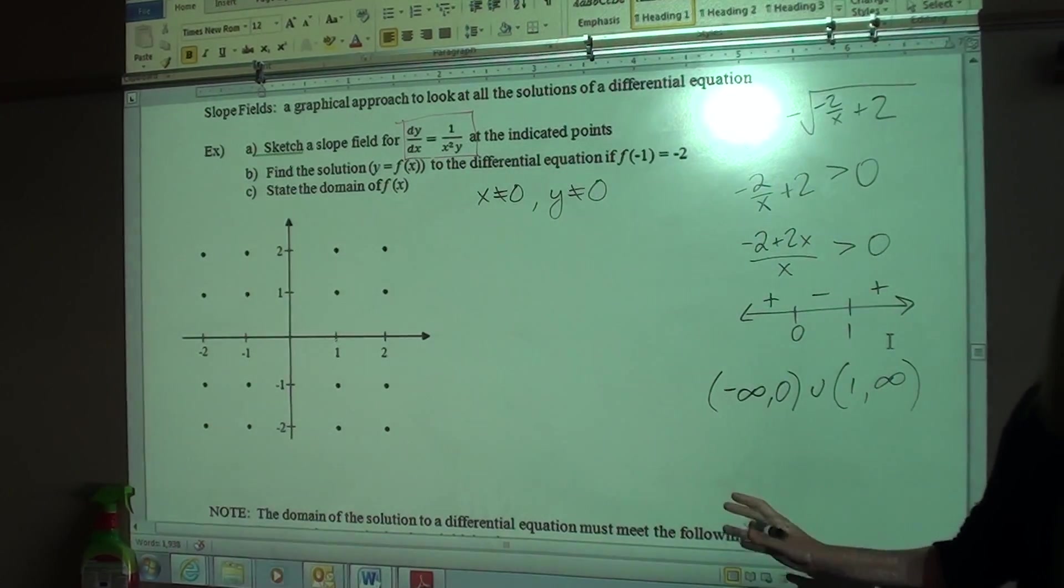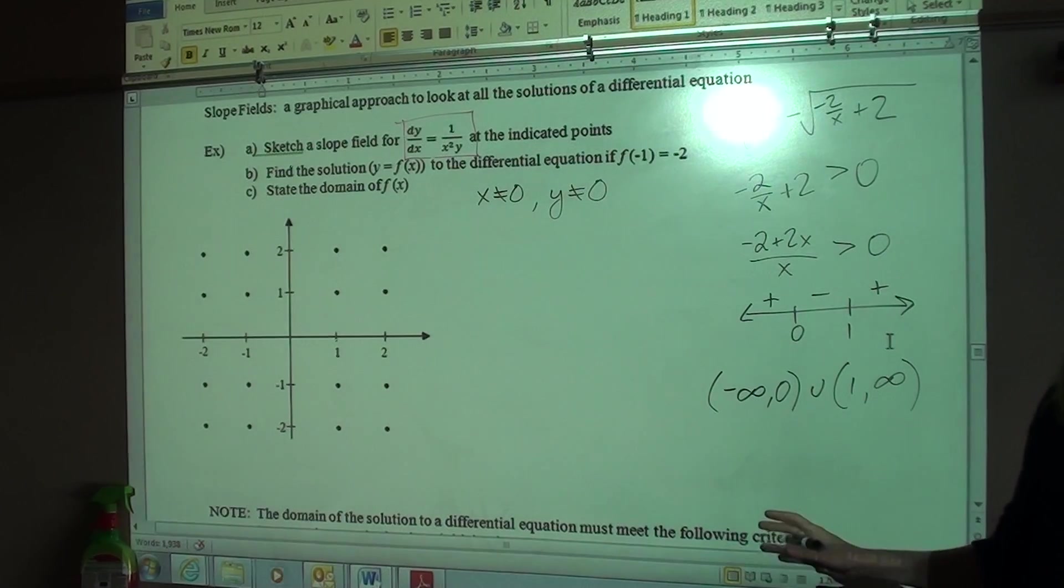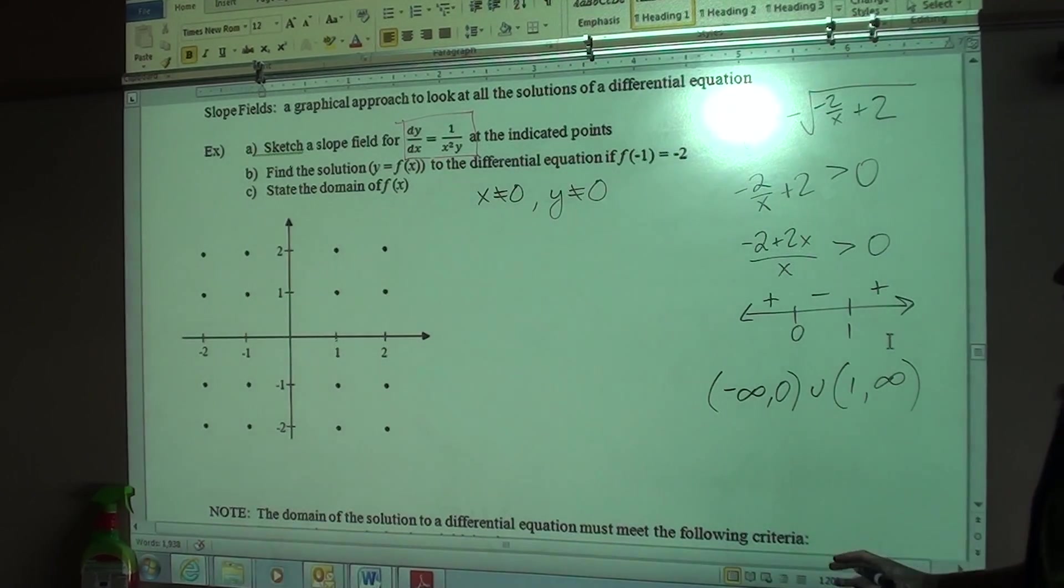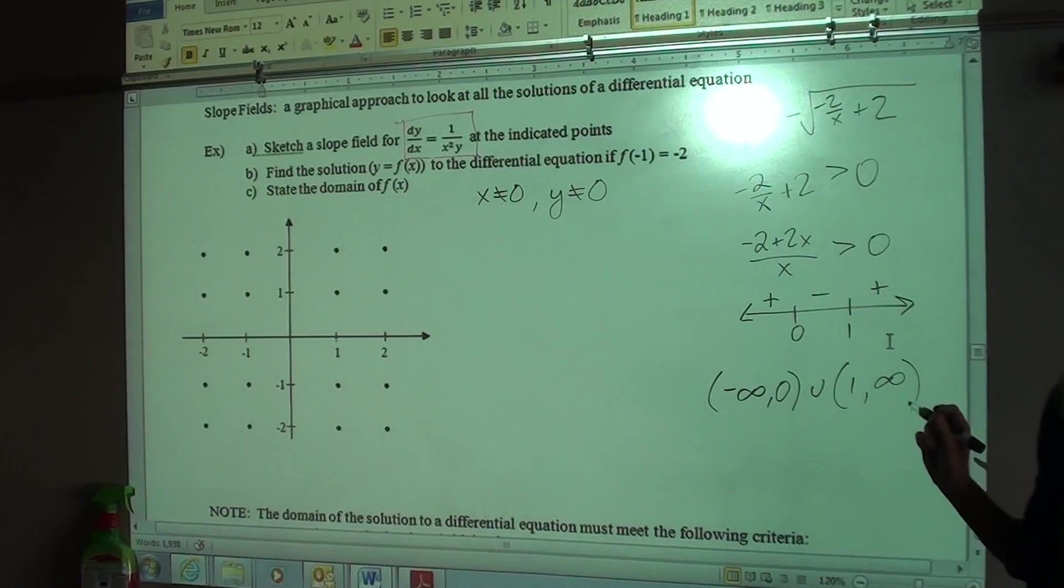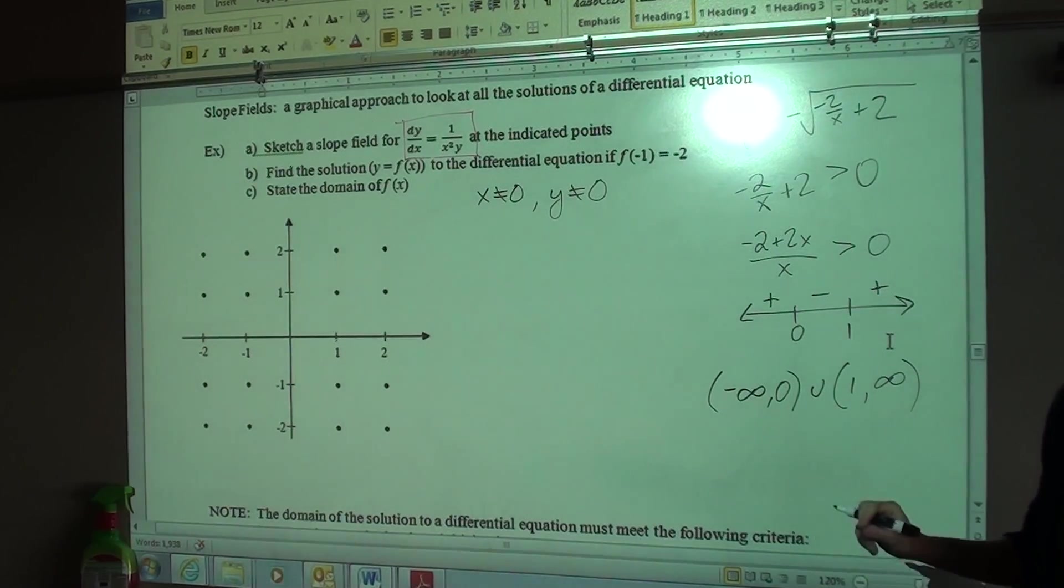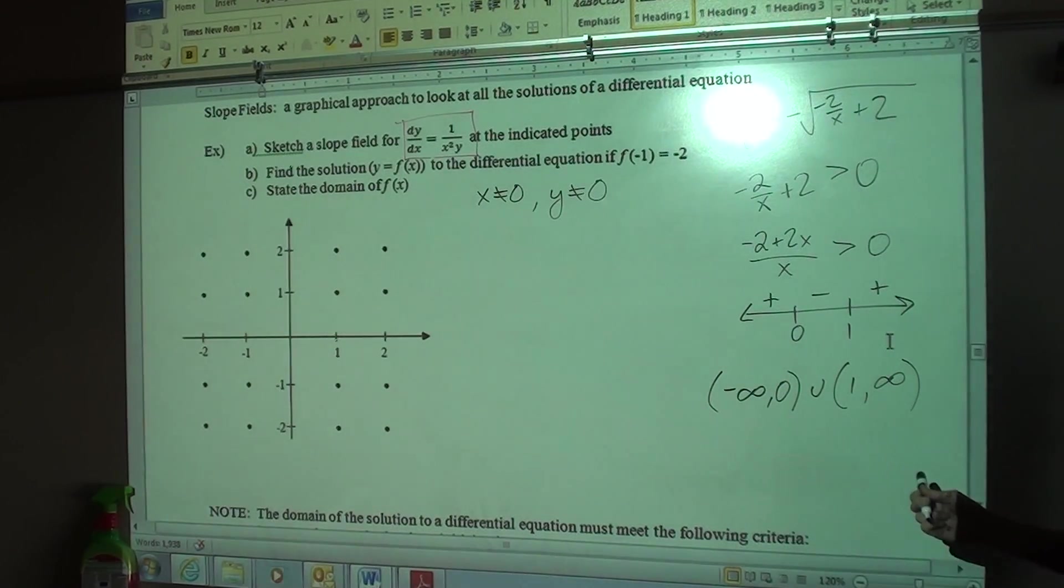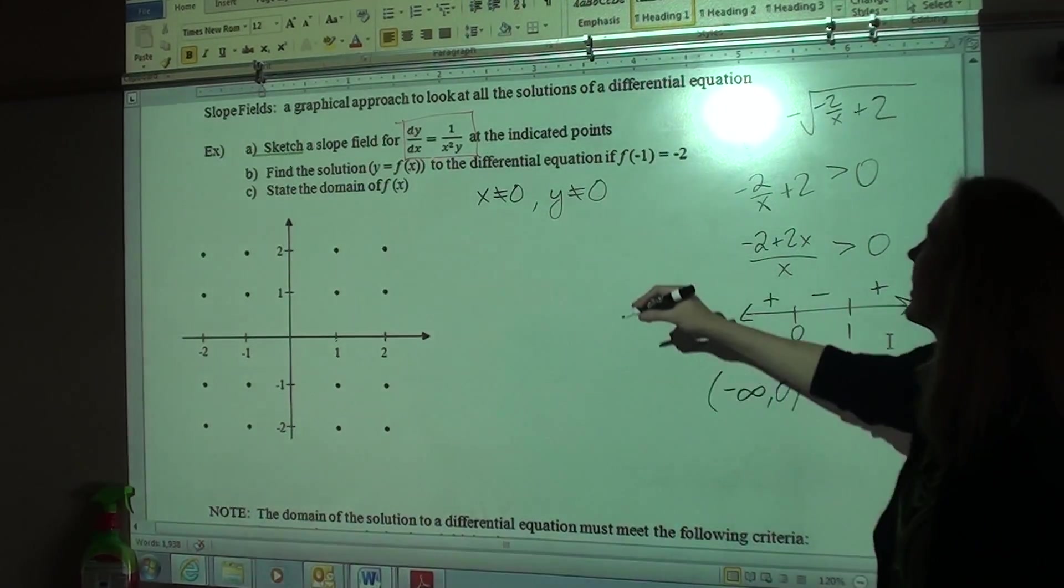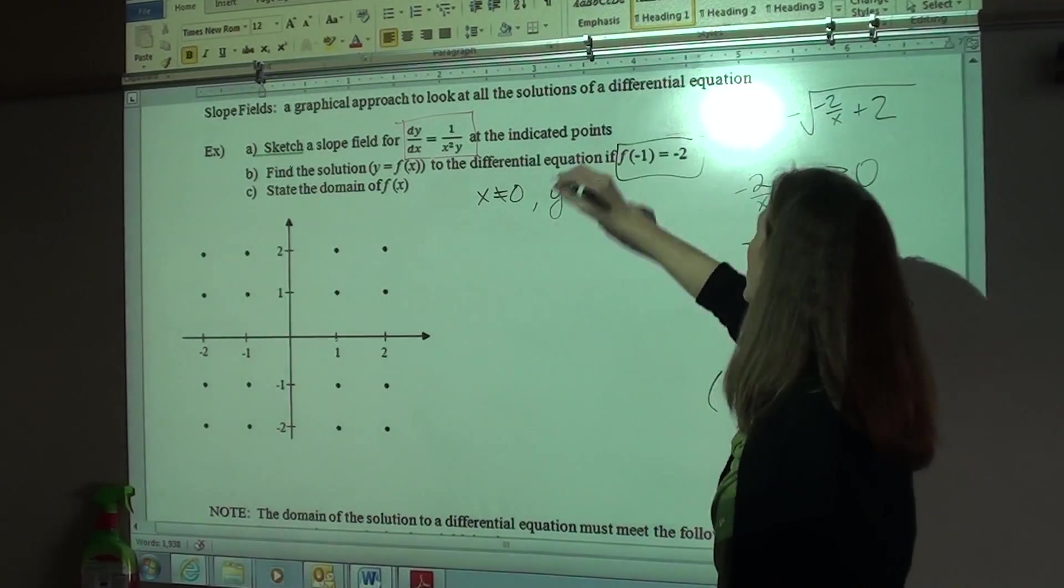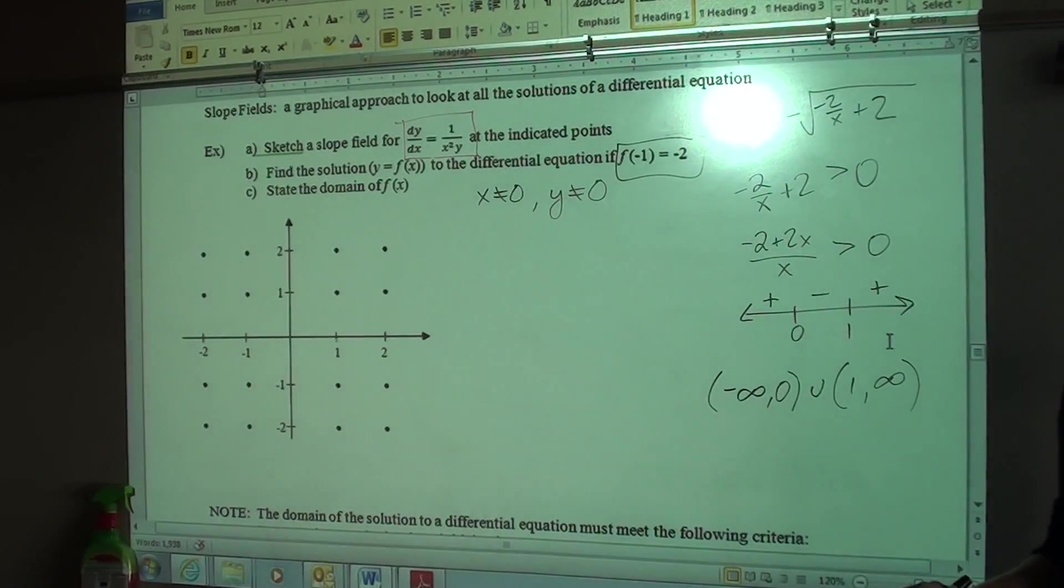But wait, there's more. There's a third criteria that has to be met. The domain of the solution to a differential equation can only be one interval. So you have to pick one of these. How do you know which one to pick? In most cases, the largest possible interval that meets the first two criterias. And contains the given point? That's number one. That's a separate point. Okay, sorry. And it has to contain the given point.